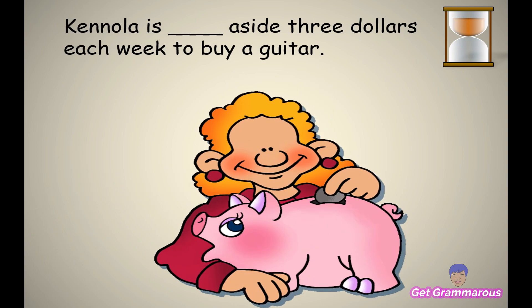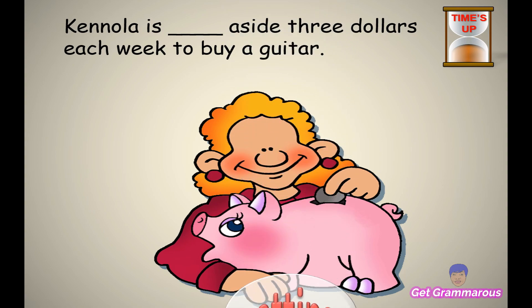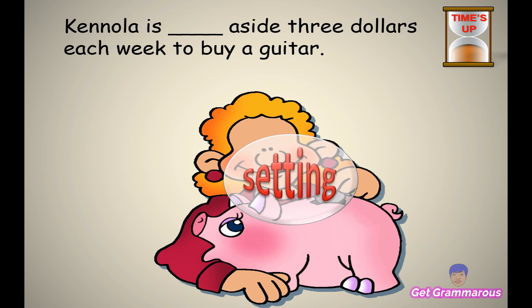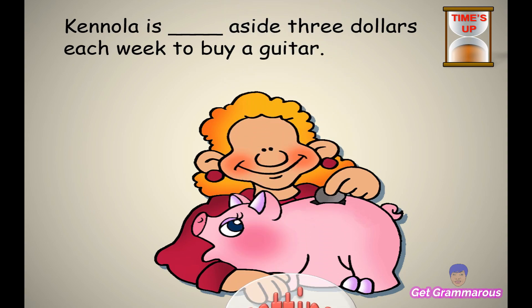'Canola is _____ aside three dollars each week to buy a guitar.' The answer is 'setting' — Canola is setting aside three dollars each week to buy a guitar.